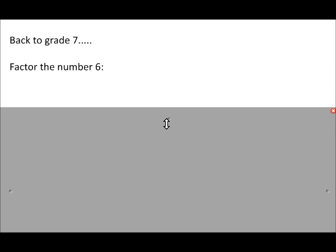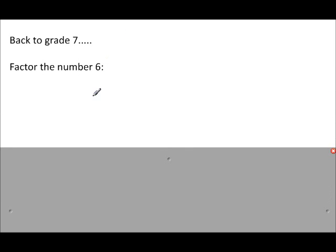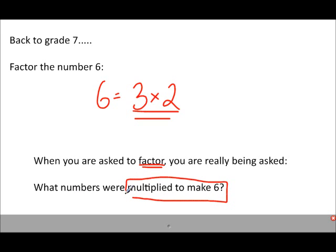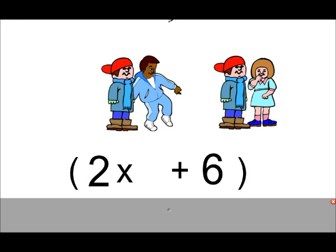First, let's talk about what factors are. Let's go back to grade 7 — if you had to factor the number 6, you would write that 6 equals 3 times 2. Those are the factors of 6. So when you're asked to factor, what you're really being asked is: what numbers were multiplied to make 6?